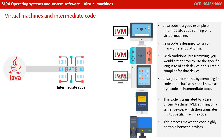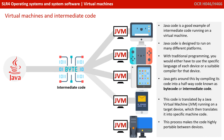This code is then translated by the Java virtual machine, the JVM, which is run on the target device. It's responsible for translating the intermediate code into the specific machine code. This process makes the Java code highly portable between different devices.